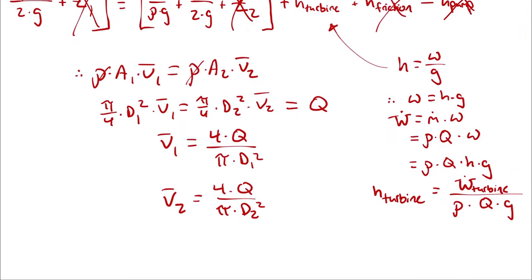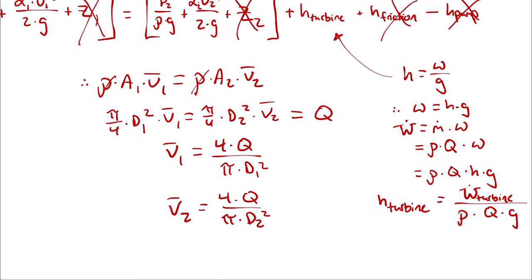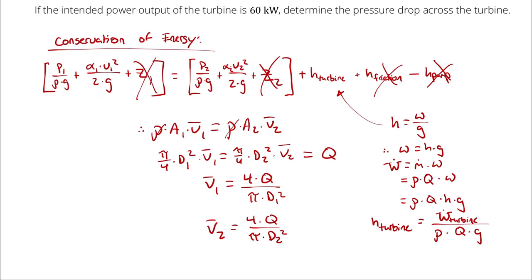In our conservation of energy equation, we have enough information to plug in for our turbine head and our velocities — quantities in terms of things that I know. I can look up a density and assume a gravity, so I should be able to write p1 minus p2, which would be the pressure drop, in terms of known quantities. So let's do some algebra.